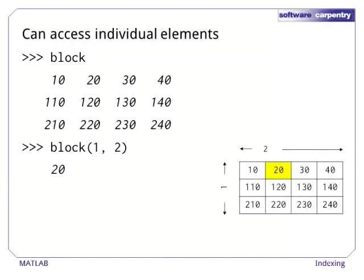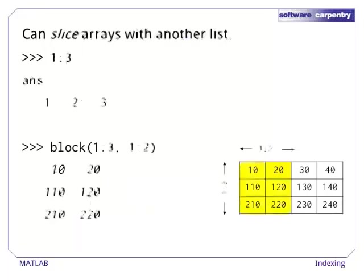Individual elements in an array can be accessed using a comma-separated list of integer indices. In most programming languages, the first element of an array is element 0. In MATLAB, indexes start at 1. Arrays can be sliced by using another array as an index. In this example, we use the array 1, 2, 3, which we can create using the shorthand 1:3 notation.